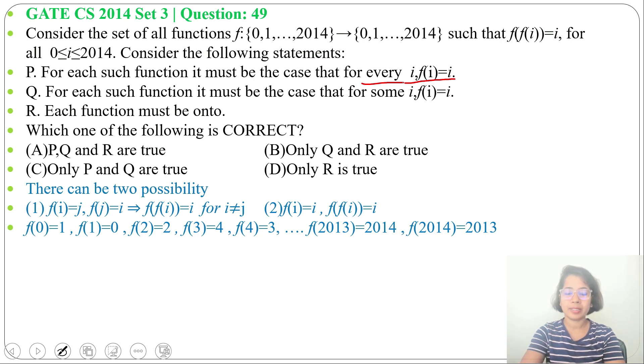Like f(0) is 1, f(1) is 0, f(2) = 2. So for some i, f(i) can be i, rest f(i) can be j and f(j) can be i. In that case also, f(f(i)) = i. So it's false due to this word 'every'.